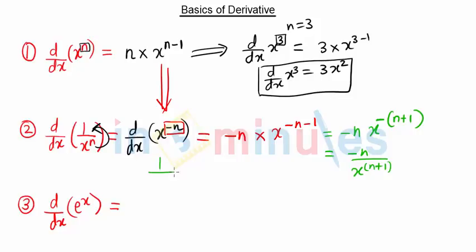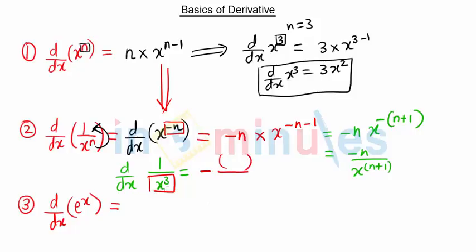Let's take an example: the derivative of 1 upon x cubed. Whenever x is in the denominator, the derivative will be negative. Above we write the power of x, which is 3, and below x raised to 3 plus 1, that is 4. So the derivative of 1 upon x cubed is minus 3 upon x raised to 4.